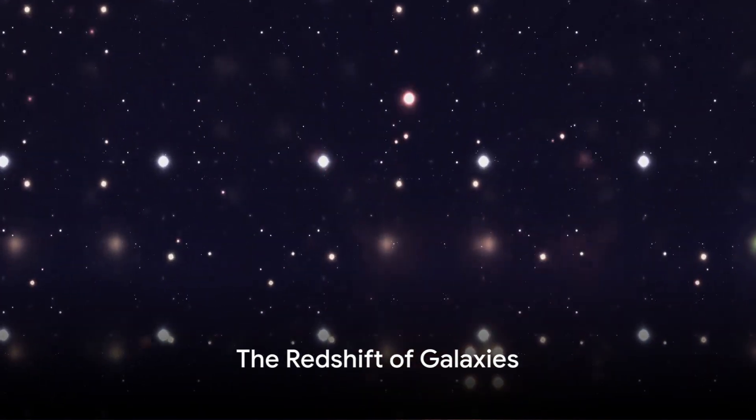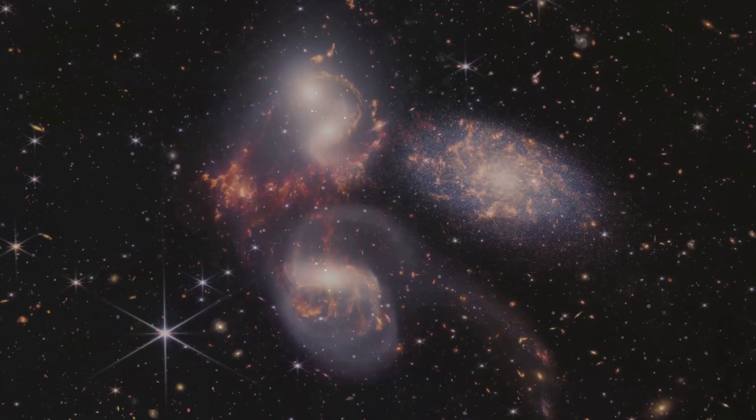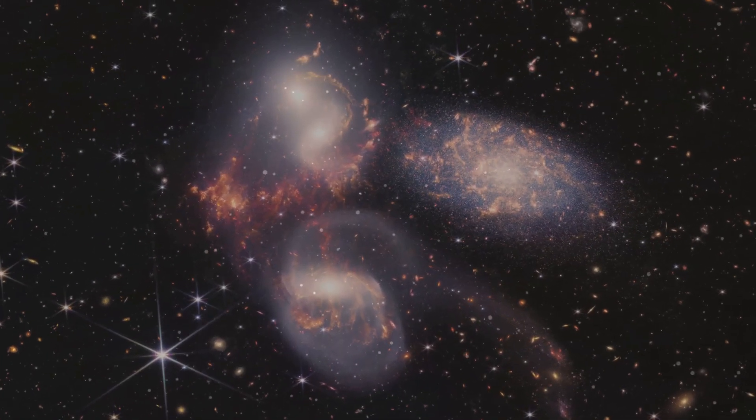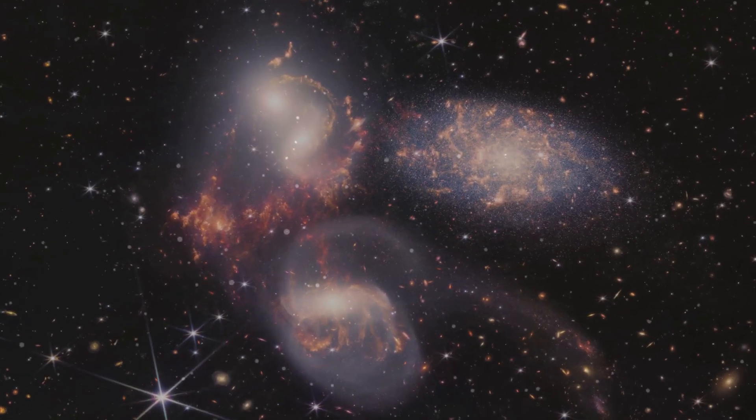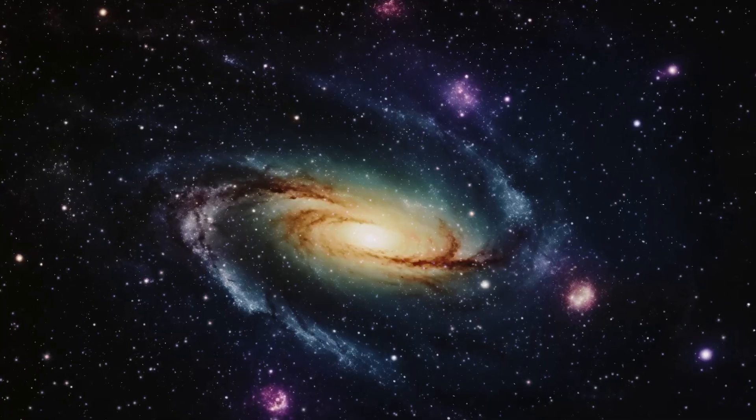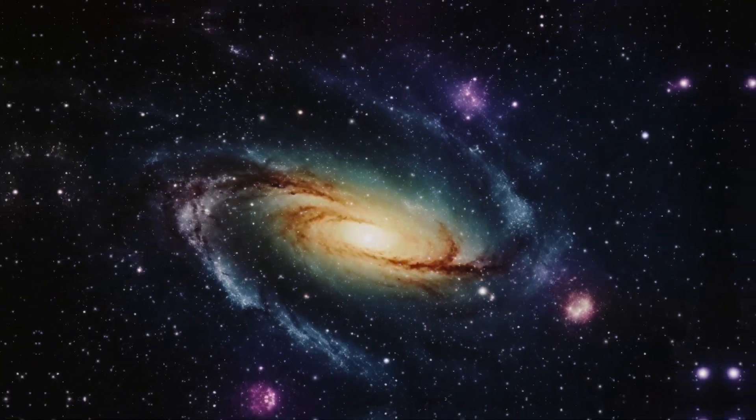Fact 5. The observed redshift of galaxies is another supporting pillar of the theory. Edwin Hubble's observations in the 1920s revealed galaxies moving away from each other, suggesting an ever-expanding universe. The farther the galaxies, the greater the redshift, indicating an increase in their speed.